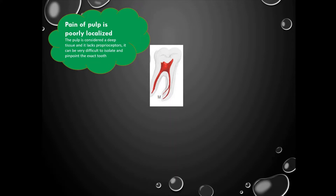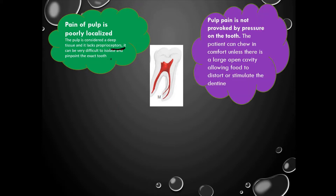Some important concepts about pulpal infection: pulpal pain is poorly localized, meaning the patient won't be able to exactly point out the tooth causing the pain, because the pulp lacks proprioceptors — unlike the periodontal ligament which has them. Also, pulp pain is not provoked by pressure on the tooth; the patient can chew in comfort unless there is a large open cavity, because the pulp is enclosed within the hard chamber.